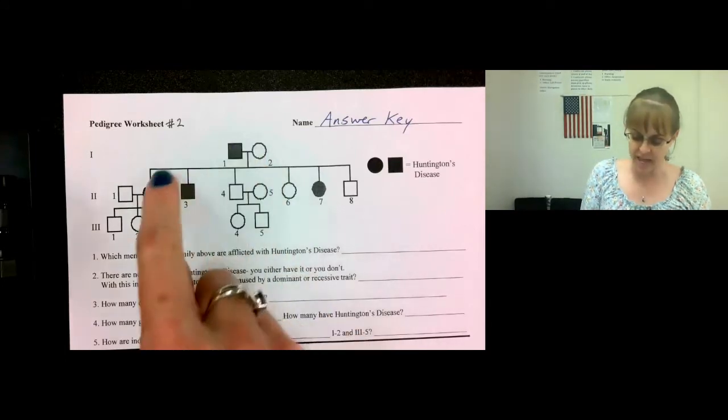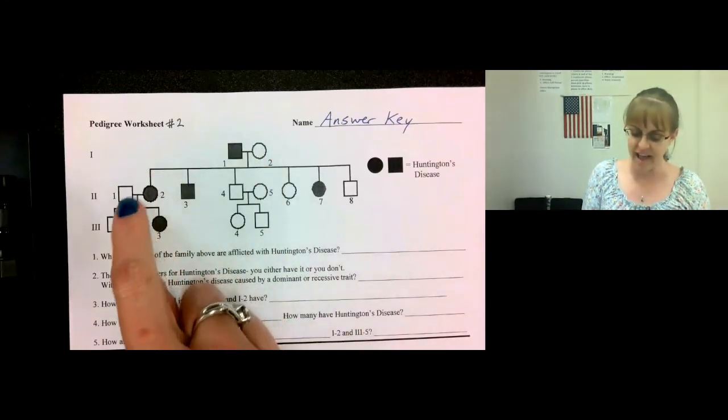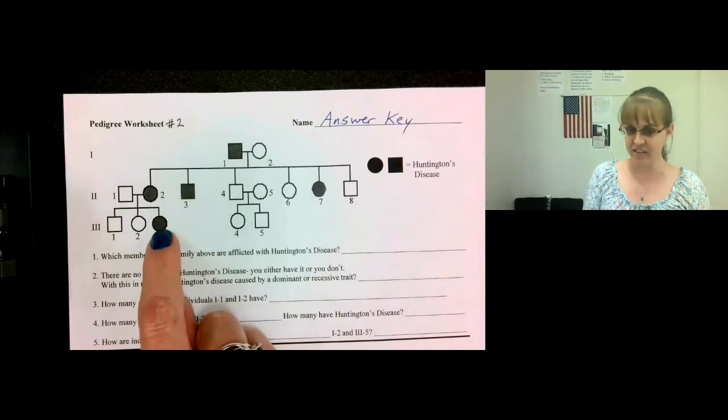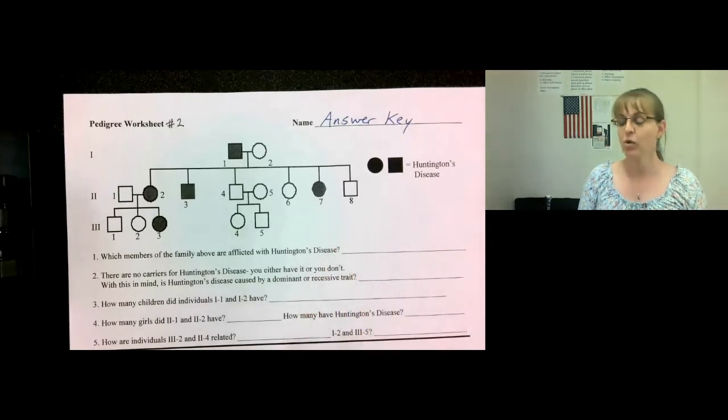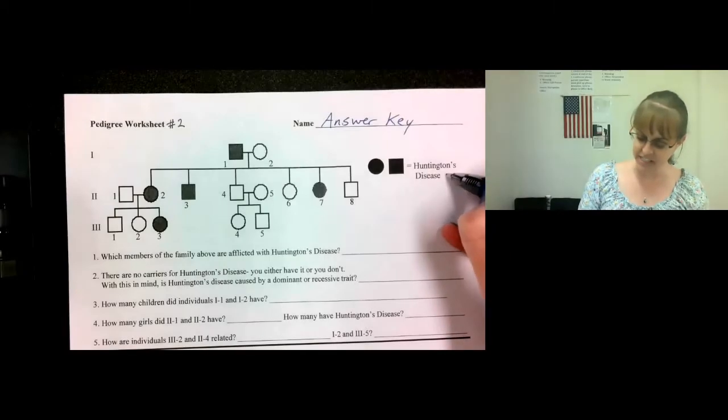It was here, and then it was again in the third generation, and these didn't have kids anyway. So it never went away in one generation and came back in the next. So this must be a dominant trait. So Huntington's disease is dominant.